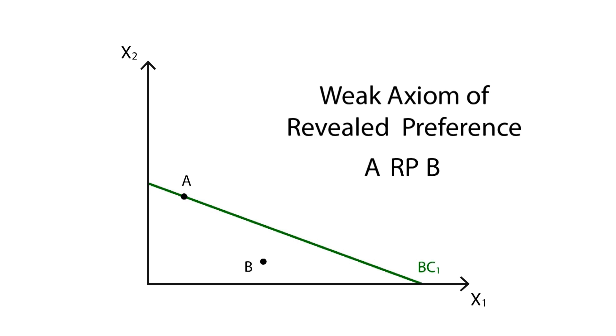If A is revealed as preferred to B, then it must be so in every case. That is, if a consumer ever chooses B, then we must assume that A was previously chosen and that the budget constraint had enough left over to allow a consumer to choose B as well.